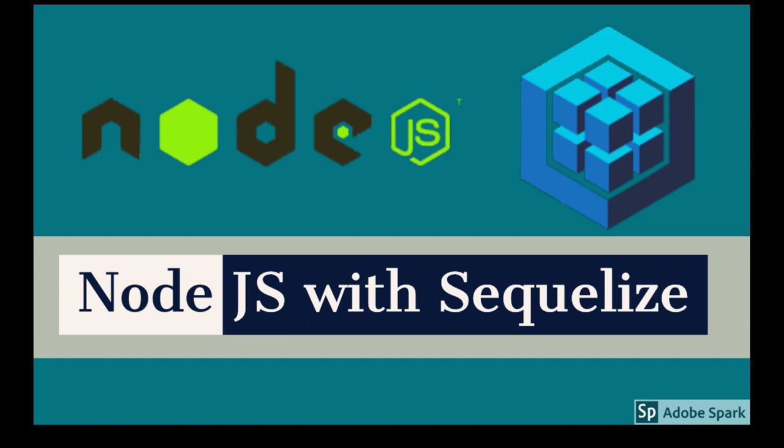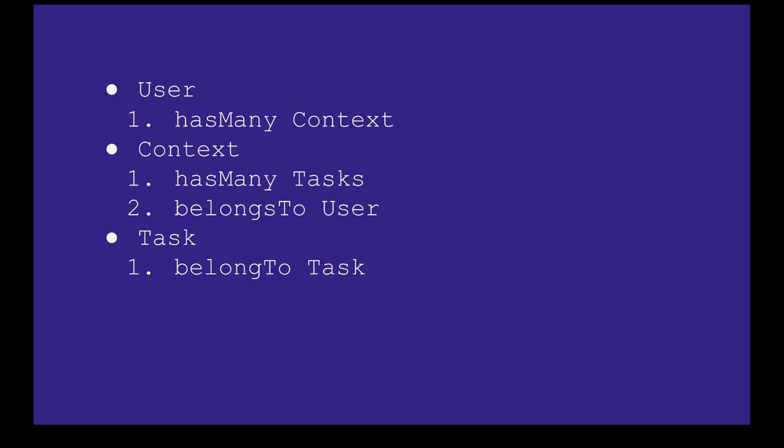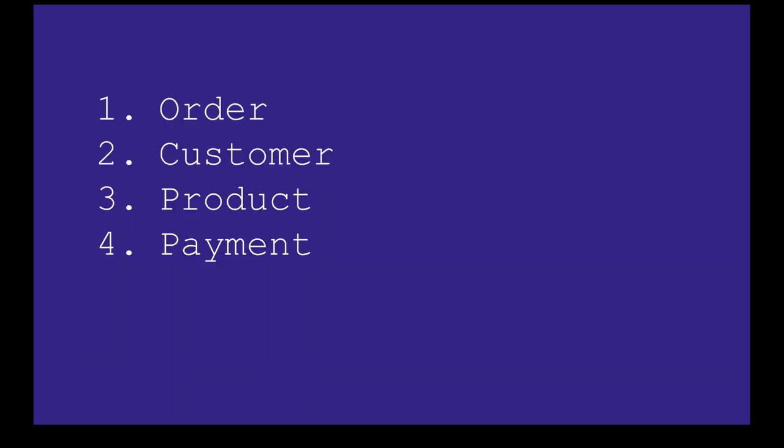Hello and welcome everyone. In this video we will look at another example to define associations — how we can define associations between multiple tables. This is a shopping cart type application we are building. We have order, customer, product, and payment.